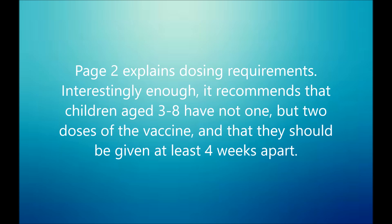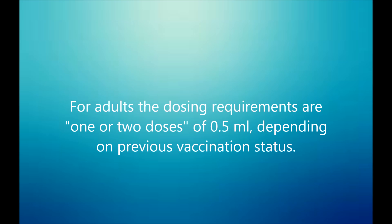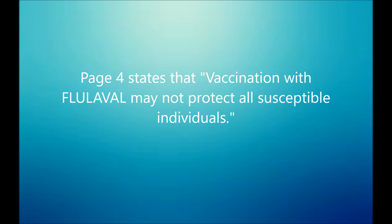Page two explains dosing requirements. Interestingly, it recommends that children aged three to eight receive not one but two doses of the vaccine, given at least four weeks apart. For adults, the dosing requirements are one to two doses of 0.5 mls, depending on previous vaccination status. Moving on to page four, it states that vaccination with flu label may not protect all susceptible individuals.